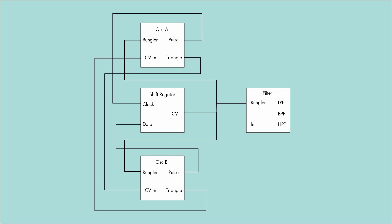Now, in Benjolin-based designs, the two oscillators' triangle waves pass into a comparator, creating a pulse waveform based on the relationship between the two oscillators. In the patch I'm going to show you, I'm just running the oscillator's output straight into the filter, so it's not the same as a Benjolin, but that's not really what I'm trying to do.